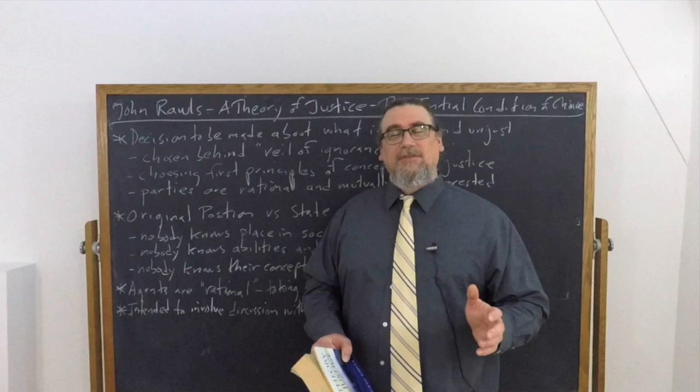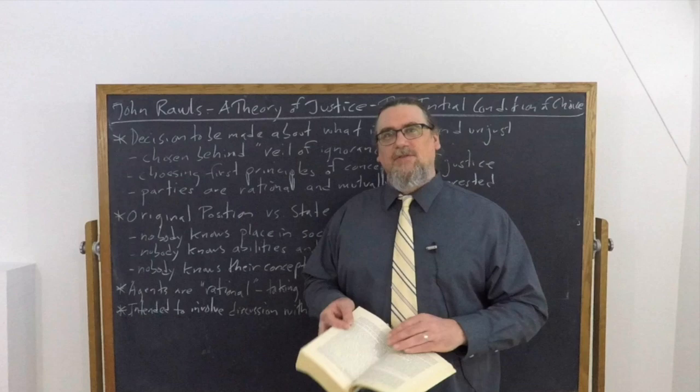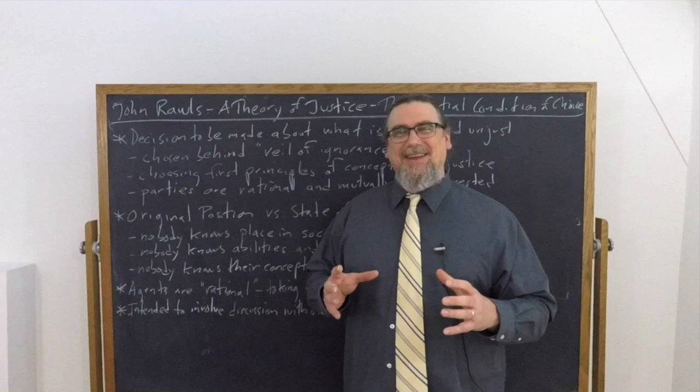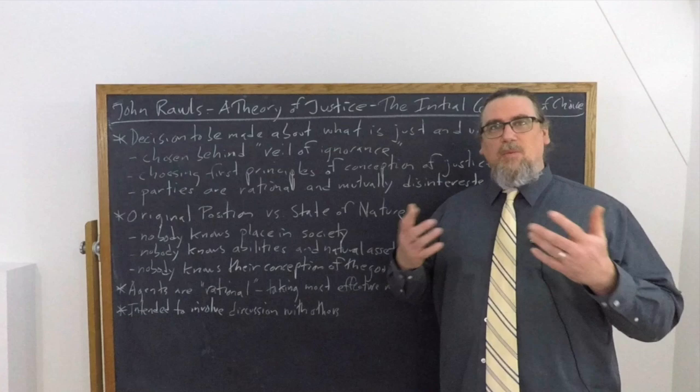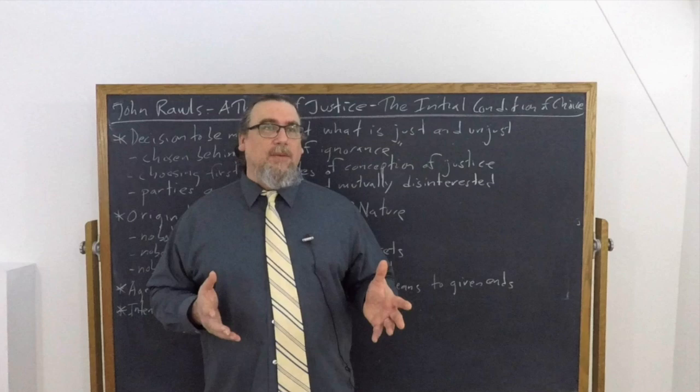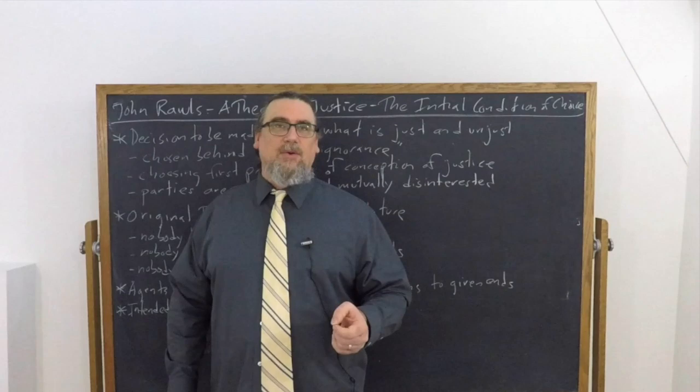Chapter 3 of John Rawls' A Theory of Justice is entitled, interestingly enough, the main idea of the theory of justice. He's going to introduce several main ideas there that are all connected together. But one of the most important starting points is what he's going to call the initial condition or original position. And it's often talked about as a veil of ignorance because Rawls, in fact, used that term. And we're going to talk about what we're ignorant of in this.